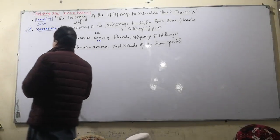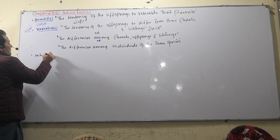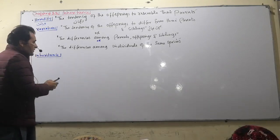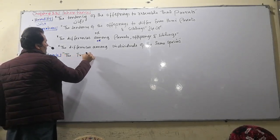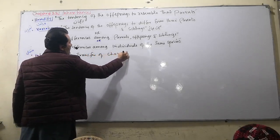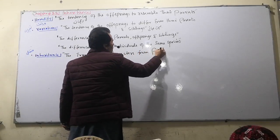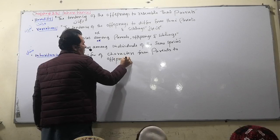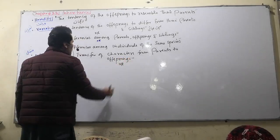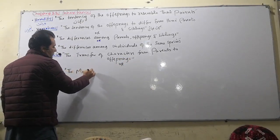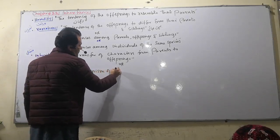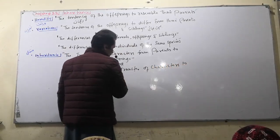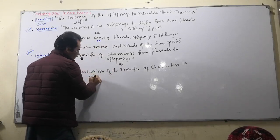This is a real variation. The second term is inheritance. Inheritance is the transfer of characters from parents to offspring. Inheritance is the mechanism of the transfer of characters to offspring from parents.